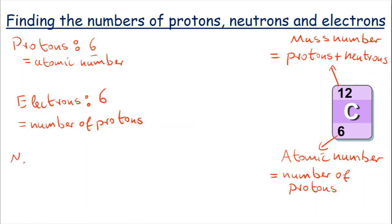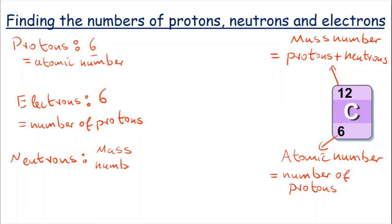Now the neutrons are a tiny bit more tricky. We need to remember that the mass number is the number of protons together with the number of neutrons — so it's protons plus neutrons. To get the neutrons, we take the mass number and take away the number of protons. Because the number of protons equals the atomic number, we write: mass number minus atomic number.